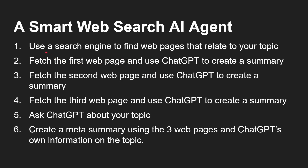As I mentioned earlier, you're going to need to use a search engine to find the web pages. You then fetch the first, second, and third pages — you can fetch ten pages if you want to. Then you get ChatGPT to create summaries of each one. You also ask ChatGPT or GPT-4 about the topic — custard pies, as I mentioned — and then you create a meta executive summary using the web pages and ChatGPT's own information to give you your final result.